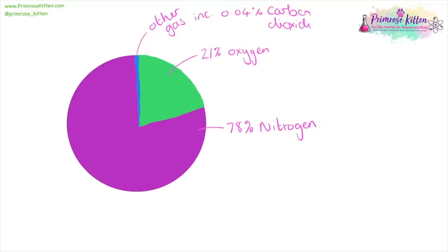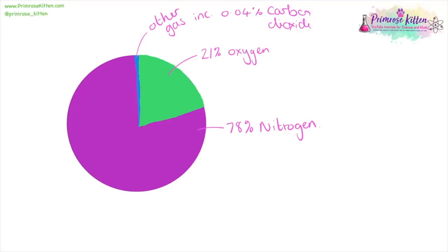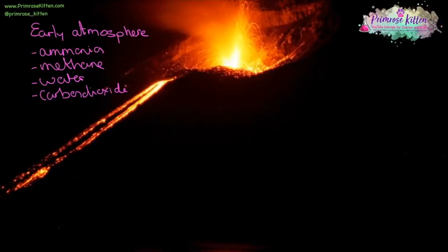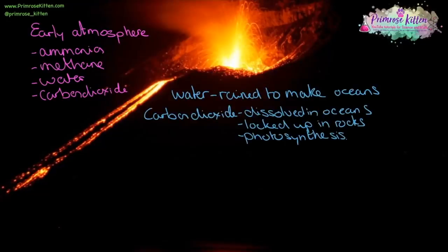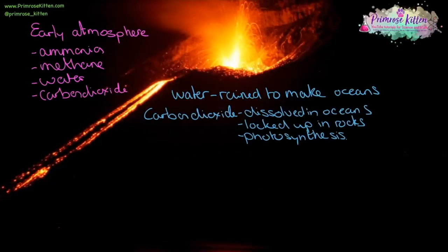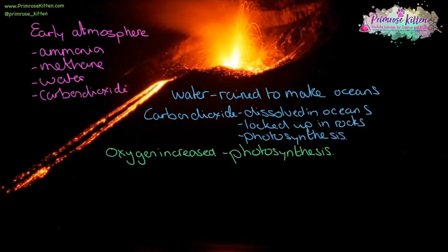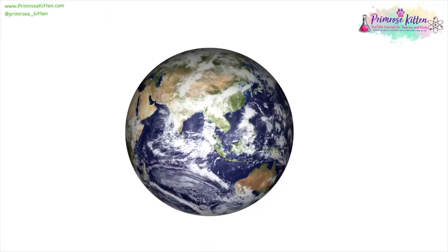The air we breathe is made up of lots of different gases — predominantly nitrogen gas with about 20–21% oxygen, and then lots of other gases including a small amount of carbon dioxide. This is very different to the early atmosphere, which was mainly formed by things coming out of volcanoes. So we had a large amount of ammonia, methane, water vapour, and carbon dioxide. The level of water vapour decreased as it rained, which made the oceans. The levels of carbon dioxide decreased as it dissolved in the newly formed oceans, turned into fossils, became locked up in rocks, and photosynthesis started to take place. With the evolution of green plants, oxygen started to increase.